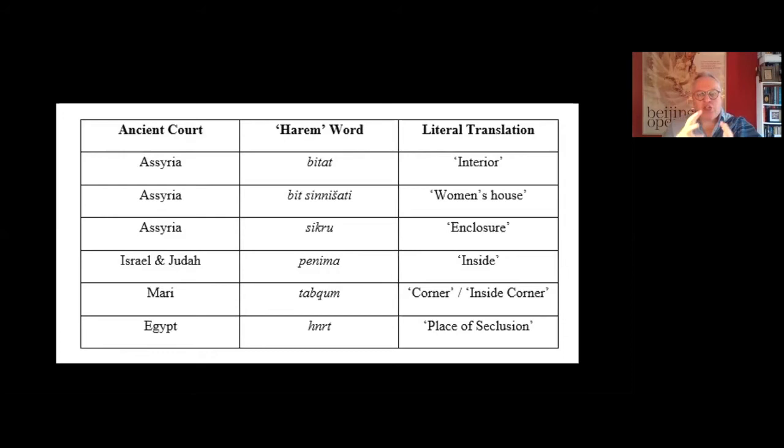In Assyria, for instance, the Akkadian word bitat, or bitse-nashati, means the interior, or the woman's house, or the enclosure. And interestingly, in Hebrew, the chief word we have in the Hebrew Bible is penima, which means the inside. We don't know what the ancient Persians used for their word for Harim, but it must be something similar — interior, place of seclusion, place that is taken away.